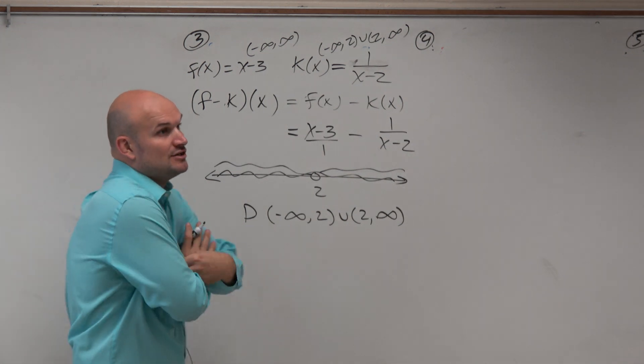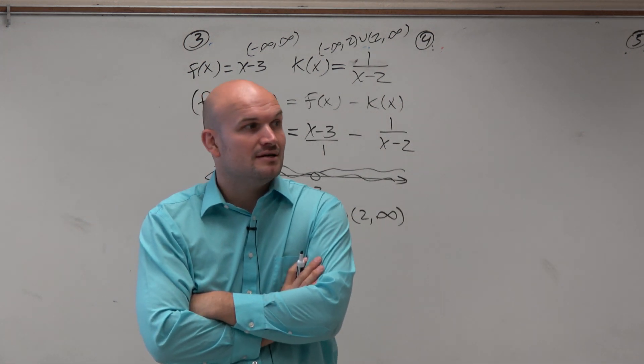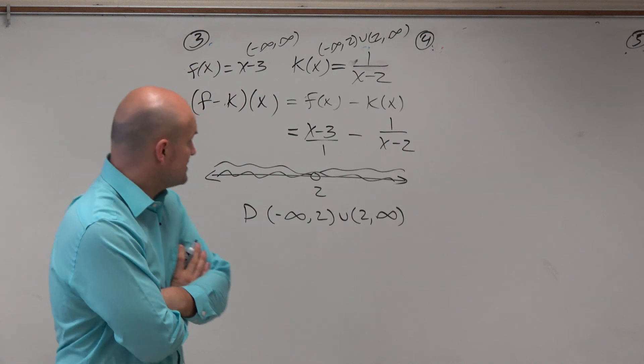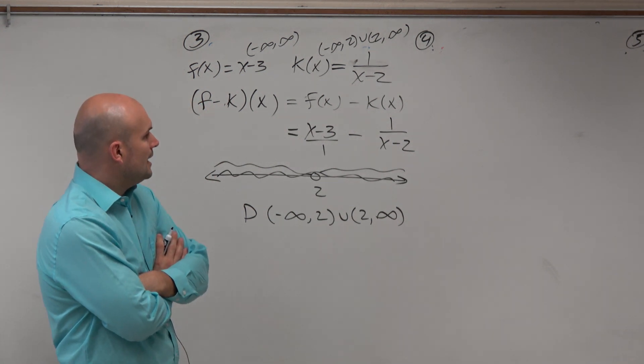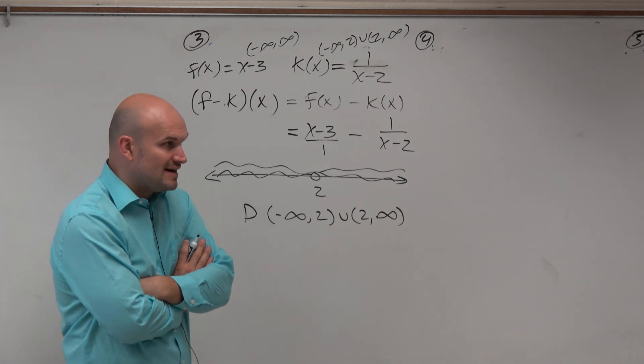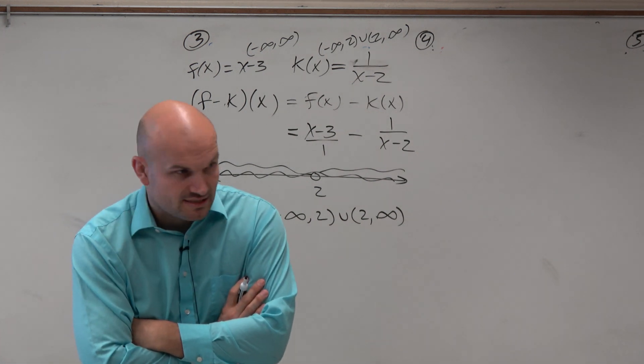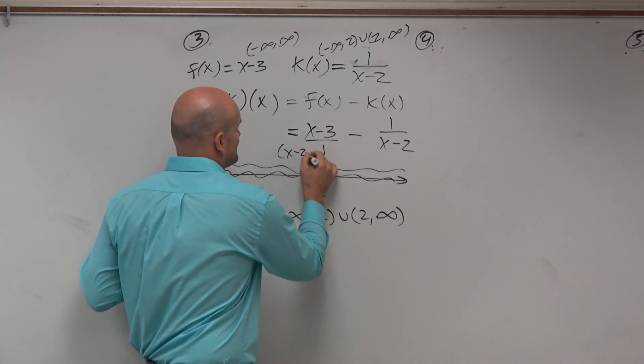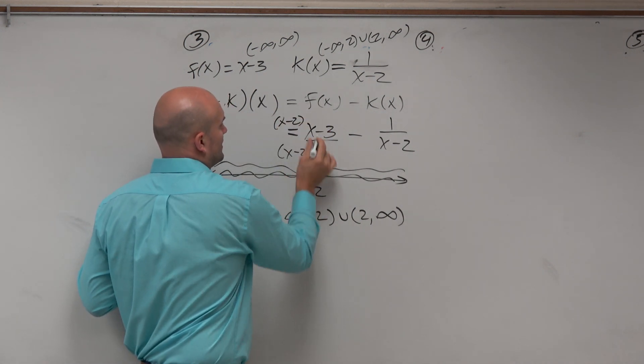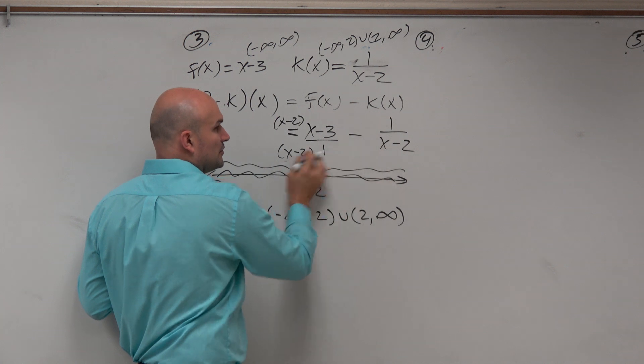Then remember, if you're adding or subtracting fractions, you have to have common denominators. Well, what's the common denominator of 1 and x minus 2? Well, the easy way to find a common denominator is just to multiply the denominators to at least get a common denominator. So if I multiply this, I get x minus 2 times x minus 2. And then, obviously, now they're both going to be x minus 2.